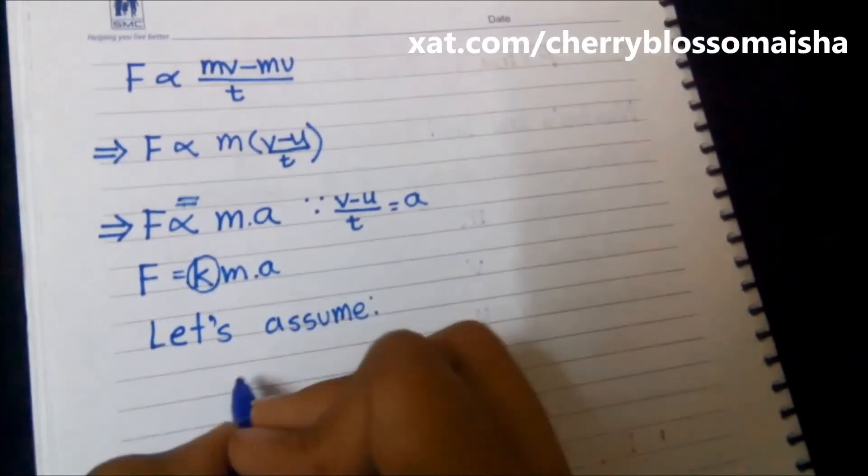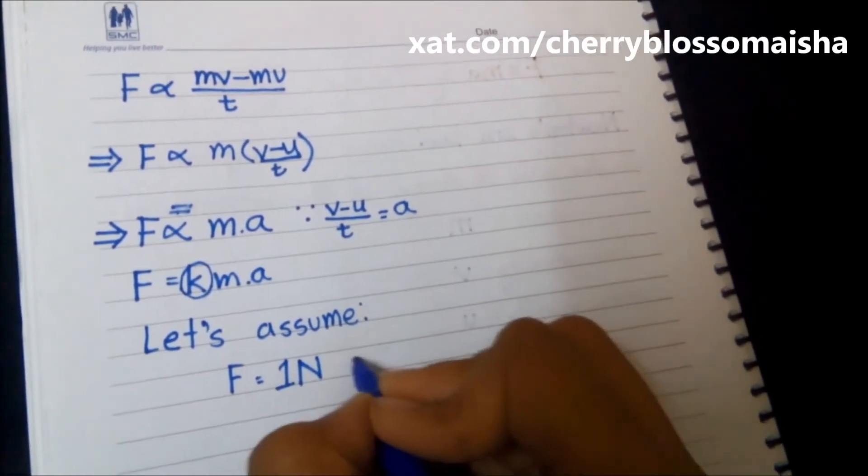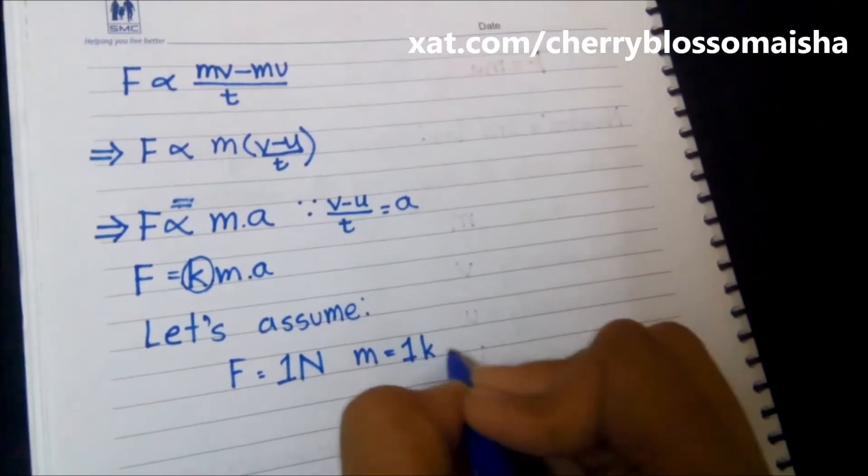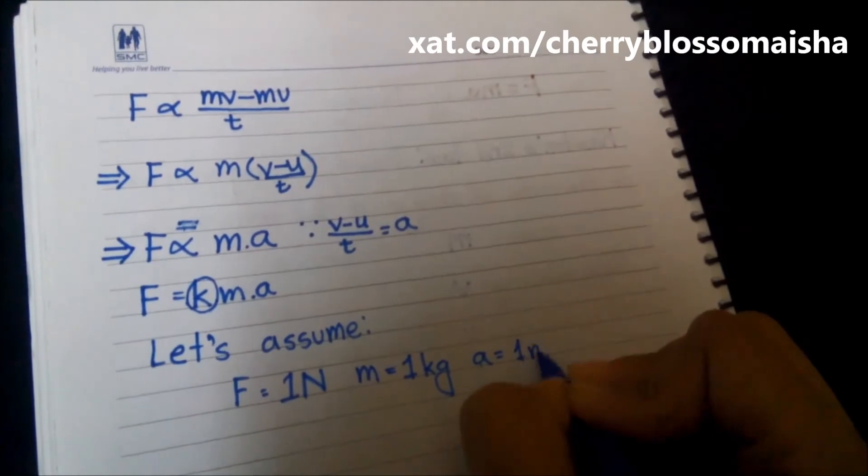So let's assume that F, that means force, is equal to 1 Newton, mass or M is equal to 1 kg, acceleration or a is equal to 1 meter per second square.